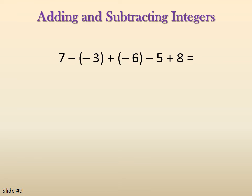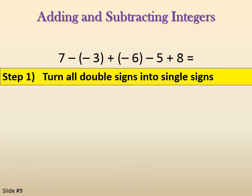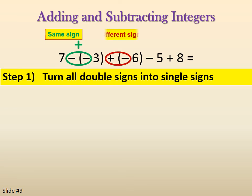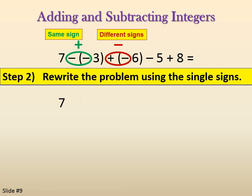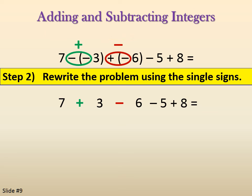Let's look at a more complex problem: 7 minus a negative 3, plus a negative 6, minus 5, plus 8. The problem here is the double signs — 7 minus a negative, where we've got 2 signs next to each other with no number between them, and then adding a negative 6. Step 1 is to turn all double signs into single signs. Subtracting a negative: they're the same sign, so replace it with an addition symbol. Adding a negative: they're different signs, so put a minus sign there. Rewriting the problem using single signs gives us: 7 plus 3 minus 6 minus 5 plus 8.